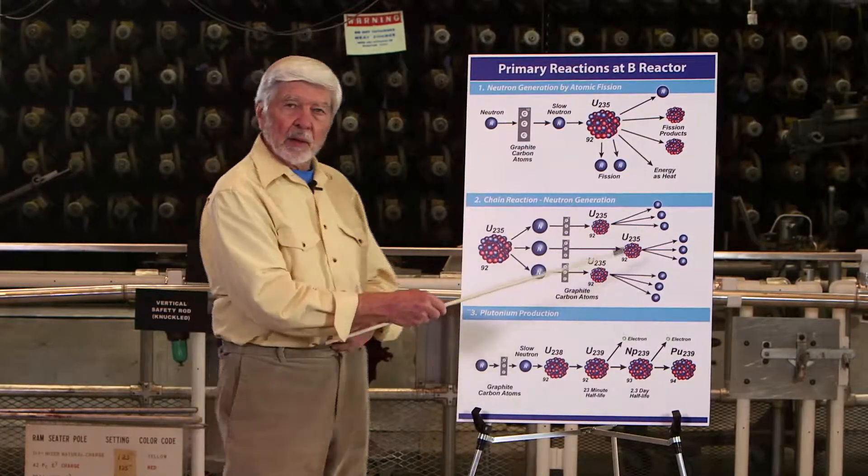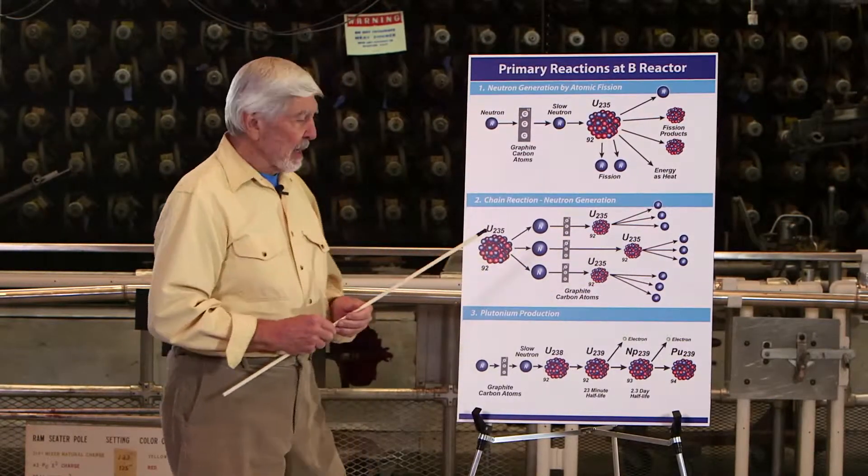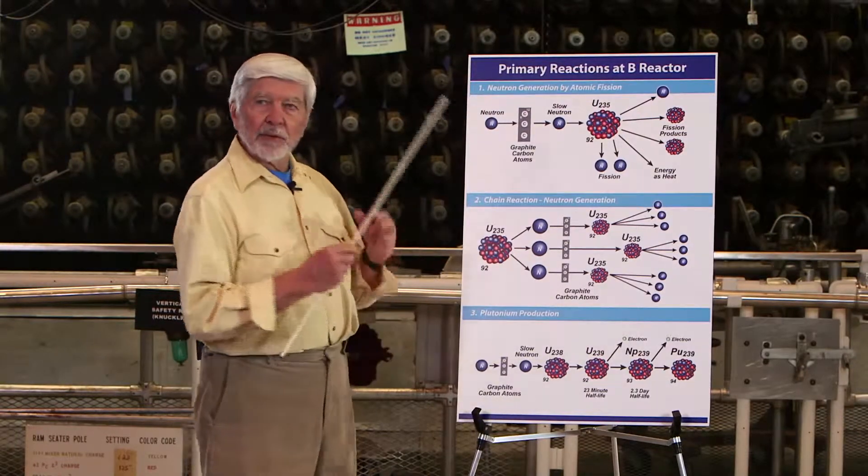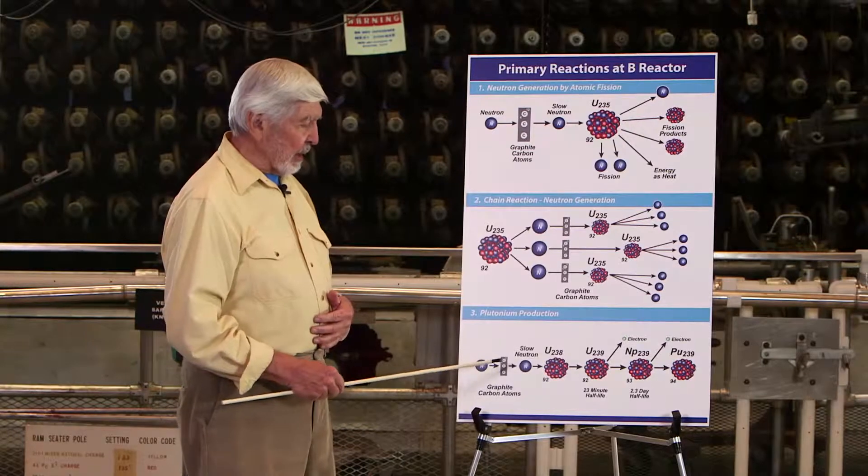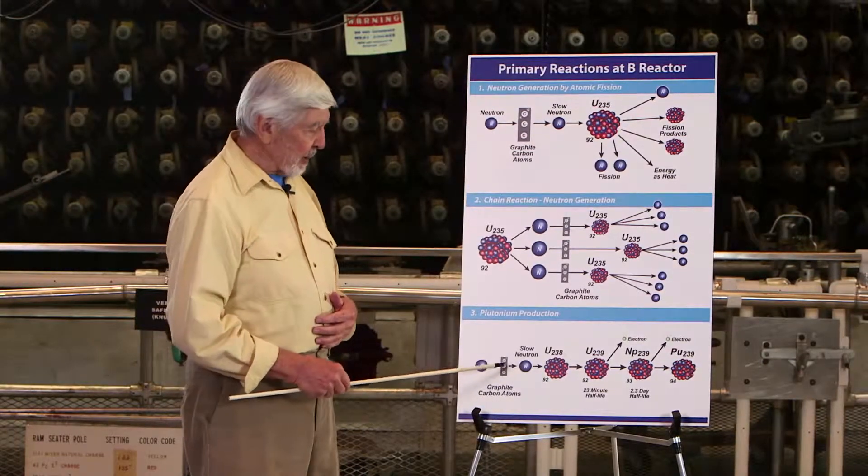Now why do we want all of these neutrons? In order to make plutonium, we need a flood of neutrons, because those neutrons are slowed down by passing through the carbon atoms.